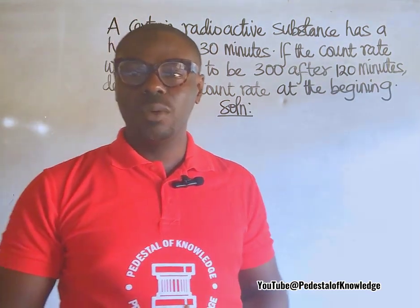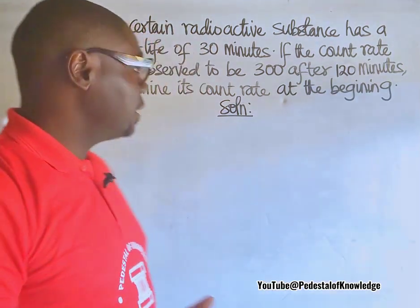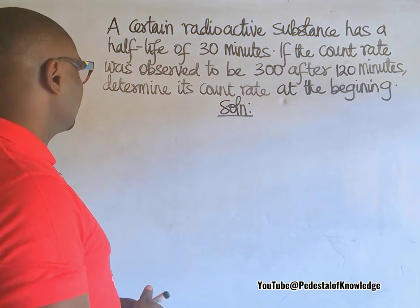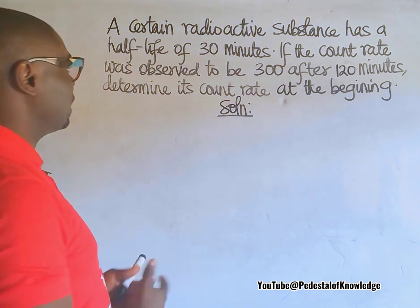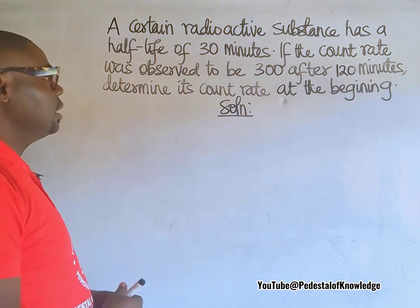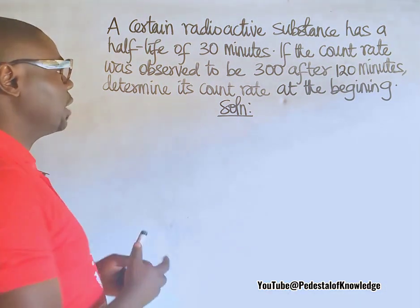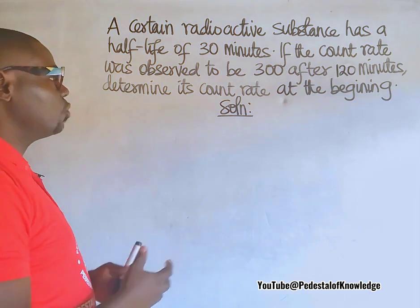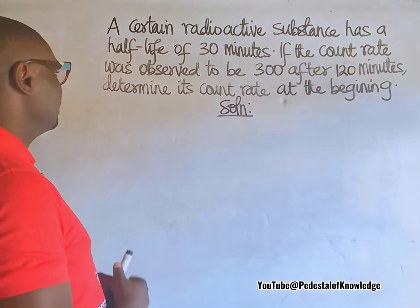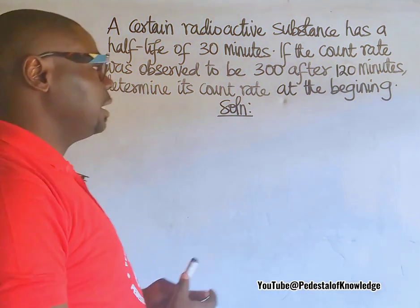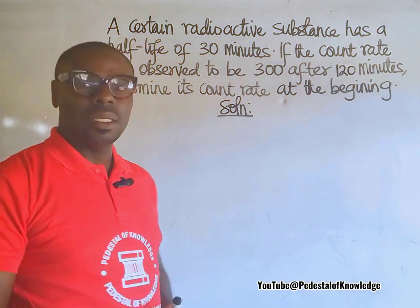Please don't forget to share this video after watching. A certain radioactive substance has a half-life of 30 minutes. If the count rate was observed to be 300 after 120 minutes, determine its count rate at the beginning.